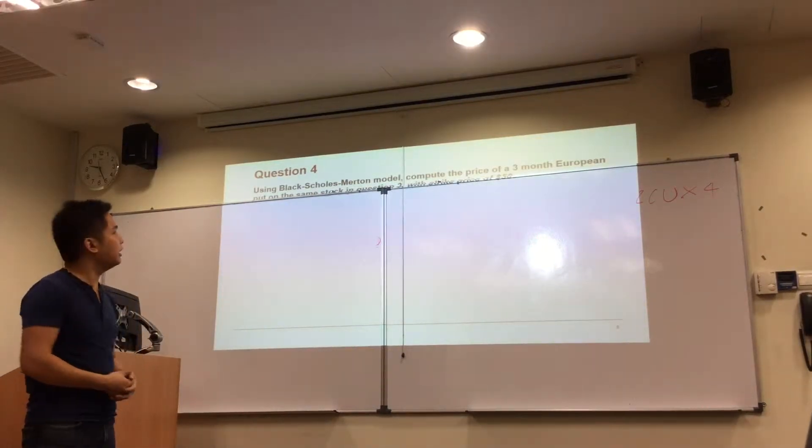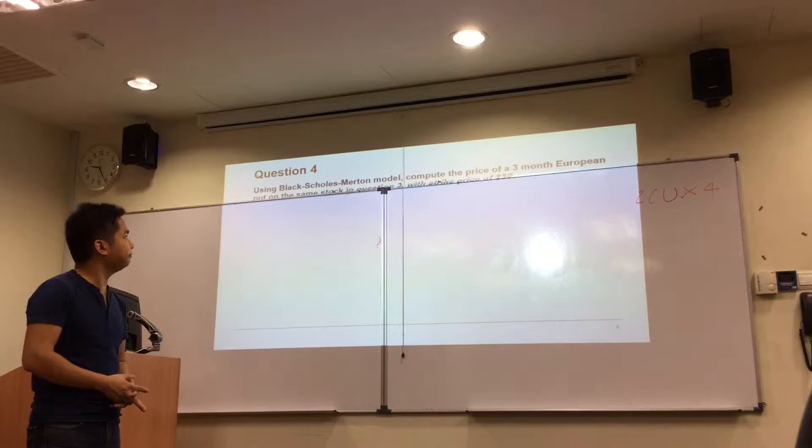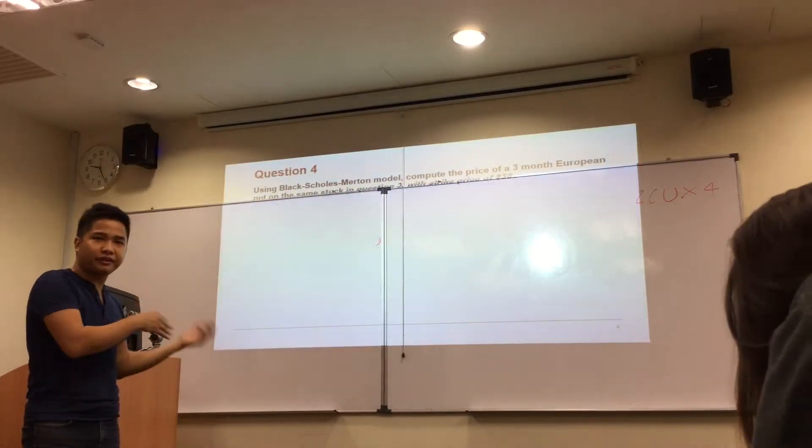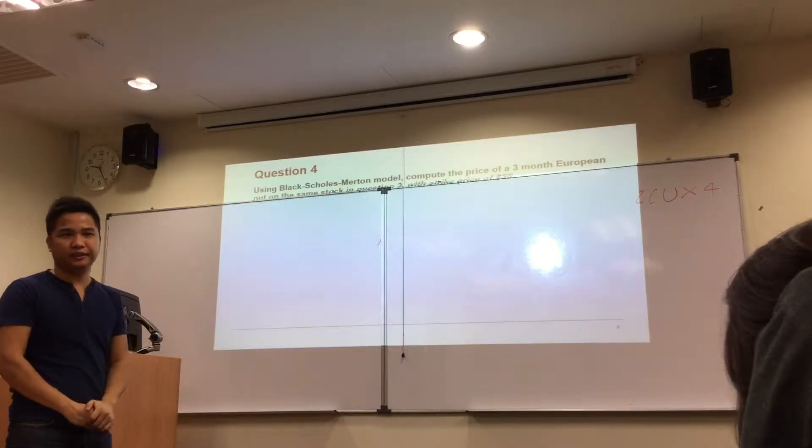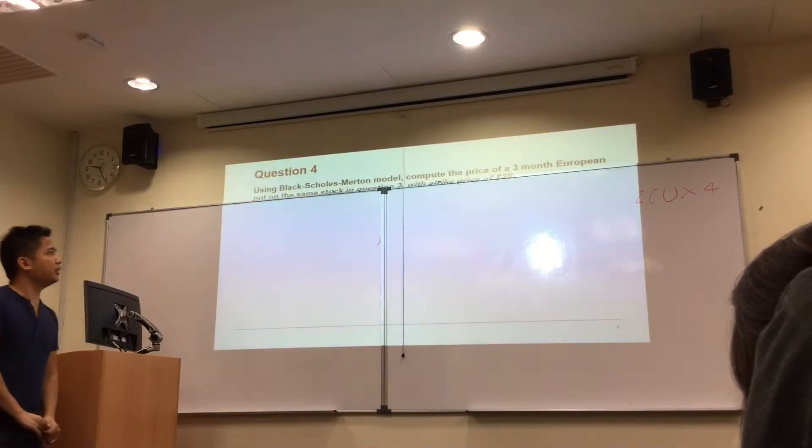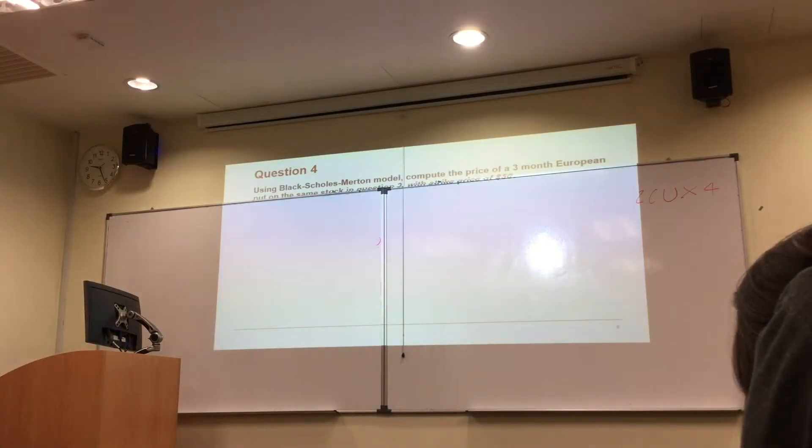We're going to calculate the put option, given that you know everything from question 3. You know D1 and D2 already. So you're going to calculate N of D1 and N of D2.